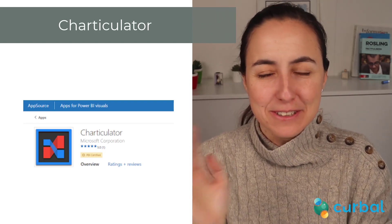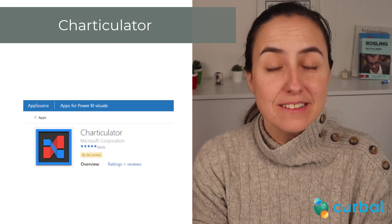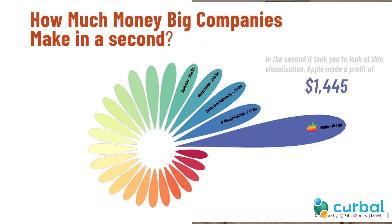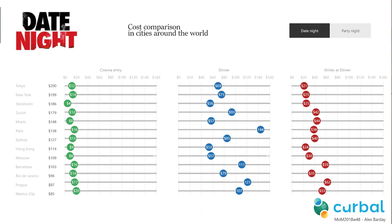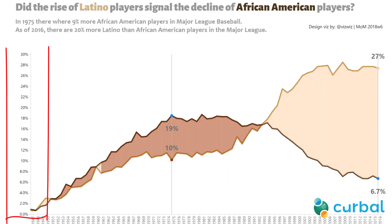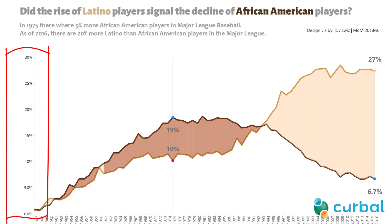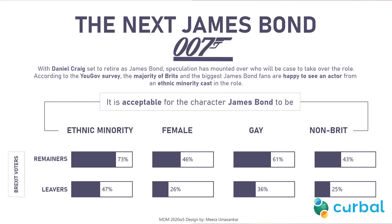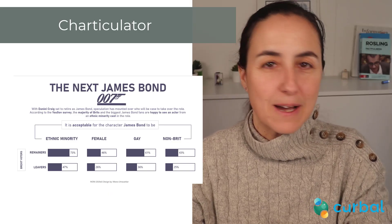For custom visuals, Charticulator has been certified — I thought it was certified last month but apparently it wasn't, so it's certified now. They also have some bug fixes, including the ability to specify how many ticks you have on the X and Y coordinates, which is super cool. Give it a go.